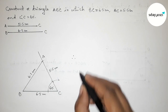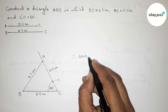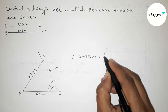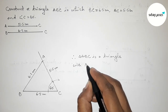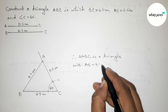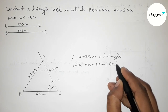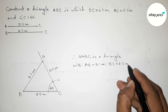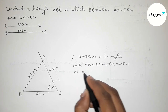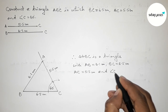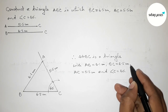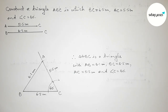Therefore, triangle ABC is constructed with AB equals 6.1 centimeters, BC equals 6.5 centimeters, AC equals 5.5 centimeters, and angle C equals 60 degrees. That's all — thanks for watching. If this video is helpful, please share it with your friends.